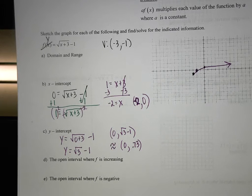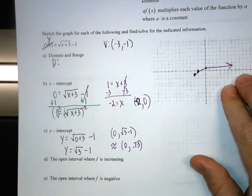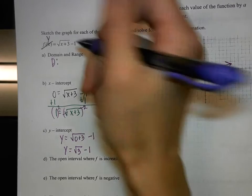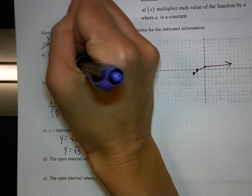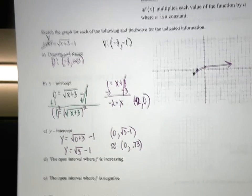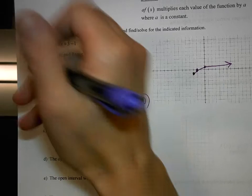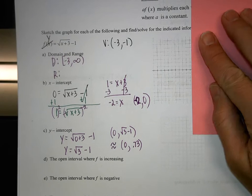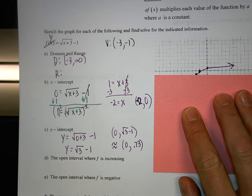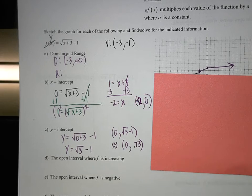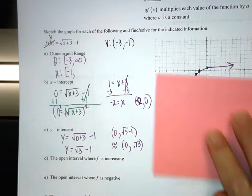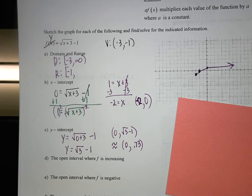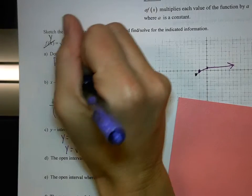This brings us to domain and range. The domain tells us where the graph exists. For this function the domain is [−3, ∞) — any values from negative 3 on will work. The range deals with Y values. The smallest Y value is at −1, and it goes to positive infinity. So the range is [−1, ∞). Even though it doesn't look like it goes up much, if it went to infinity the Y values would also go to infinity — there are no asymptotes preventing it.